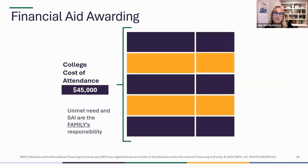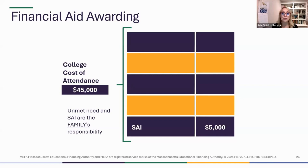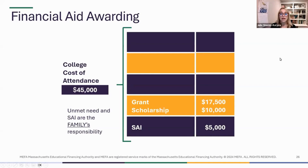I'm going to pretend I'm a financial aid administrator — I once was — and make an award for a student. My college has a cost of attendance of $45,000 and your family's Student Aid Index is $5,000. First I'd place the family's contribution, then award a need-based grant of $17,500 and a $10,000 scholarship because the student has a straight-A average in high school.